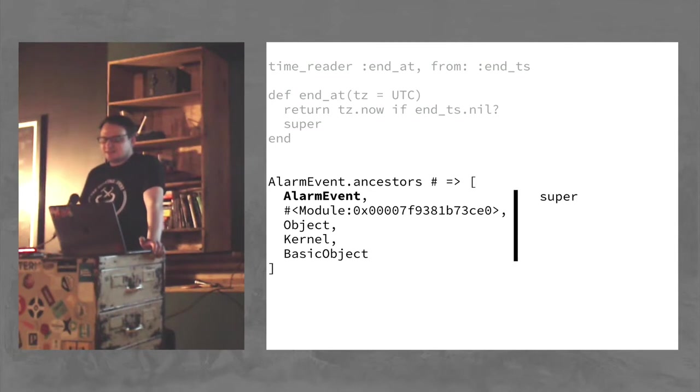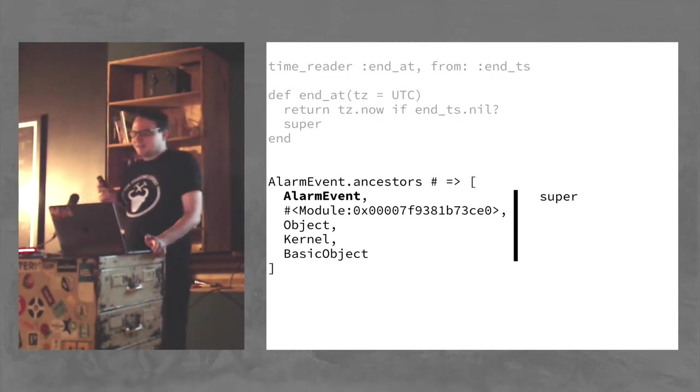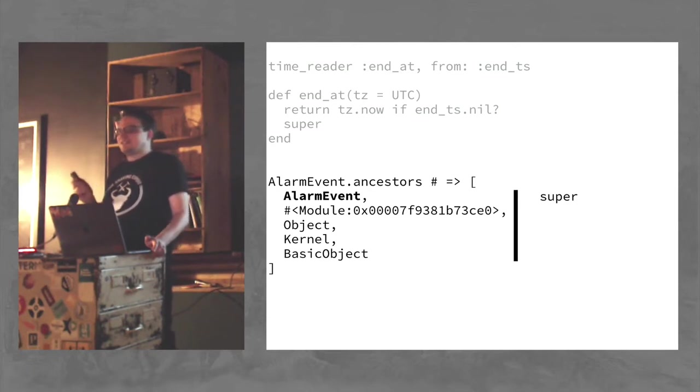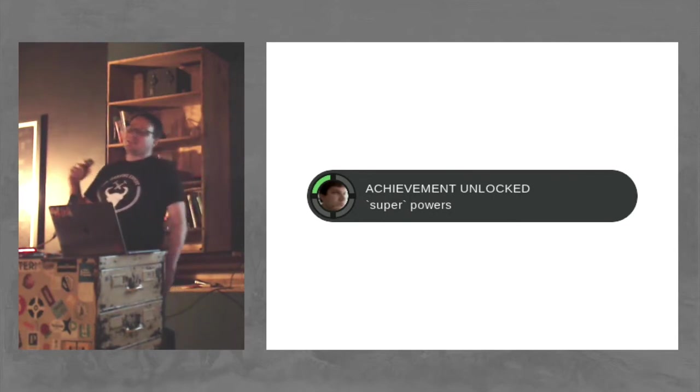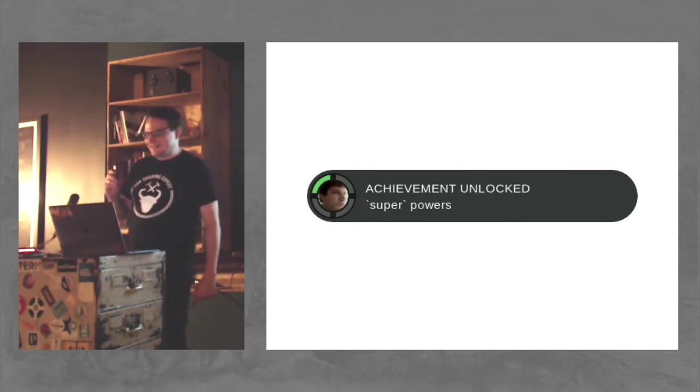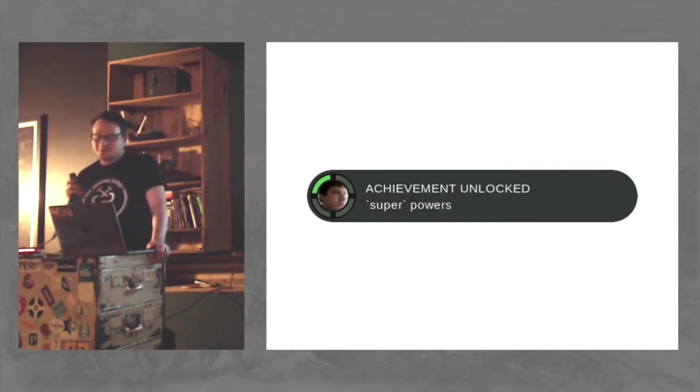So what it's doing is, if you look at the ancestors of the alarm event class, we have now injected this crazy anonymous module with a memory address. And when we're in the alarm event class in a method and we call super, what it does is it starts looking through the ancestry chain to find if there's anything that defines that method. If it doesn't find it, then it blows up like we saw before. But in this case, it's going to find it on this anonymous module, and we're good to go. So now we have superpowers. So the name of the talk actually came true. Maybe they're not the superpowers you're hoping for, but I think that's usually how it works.